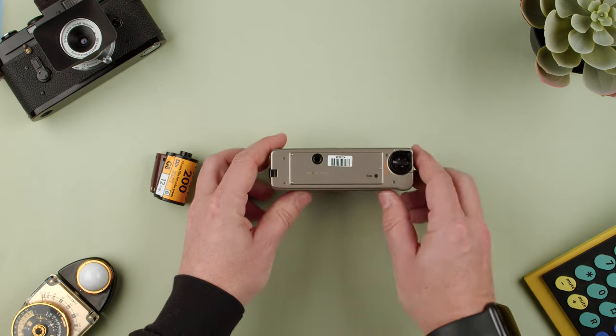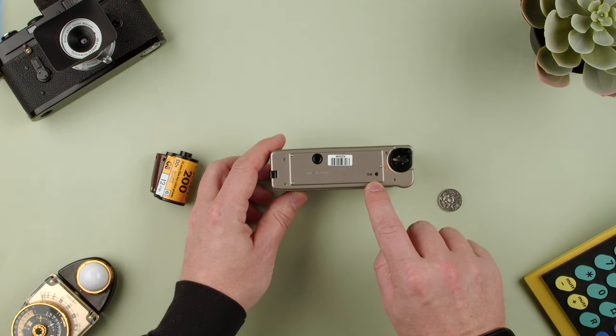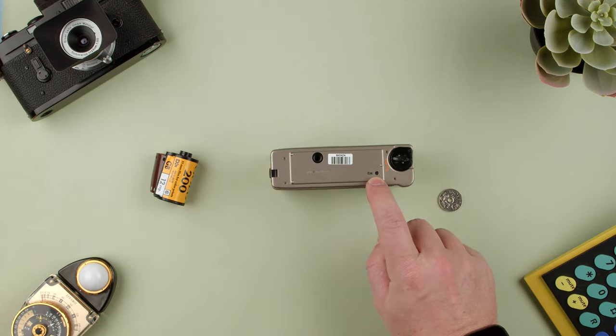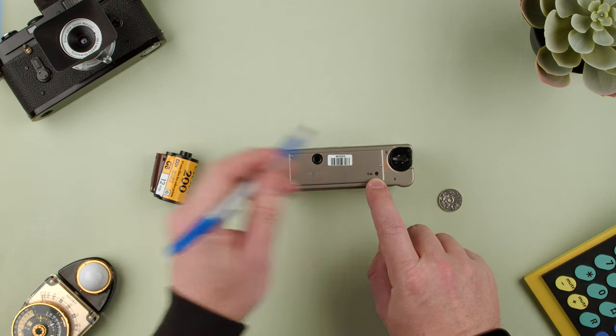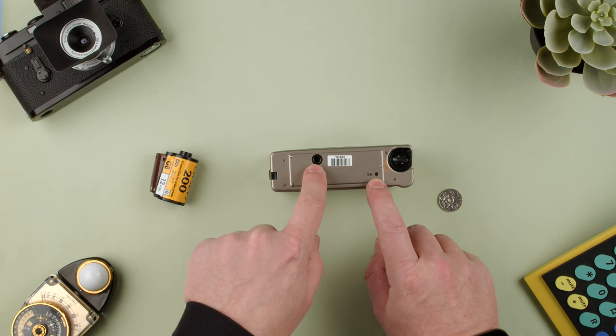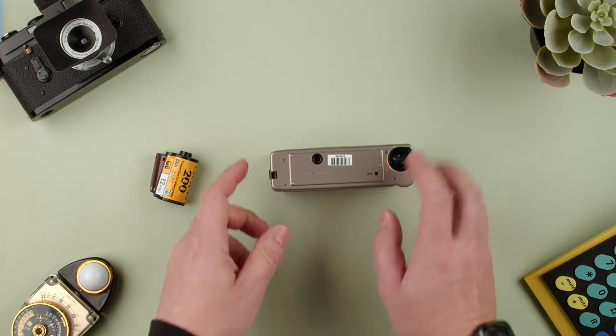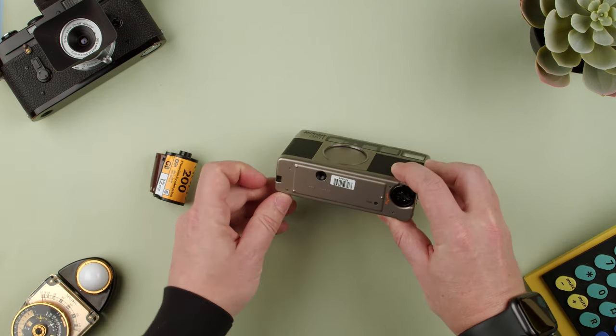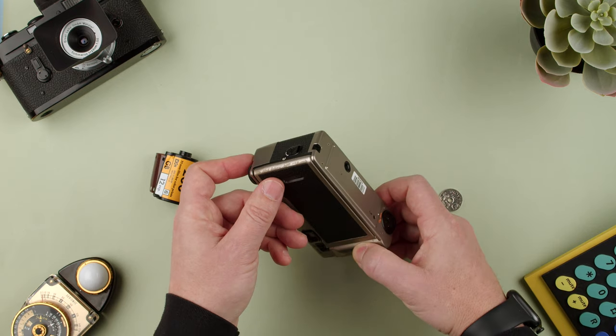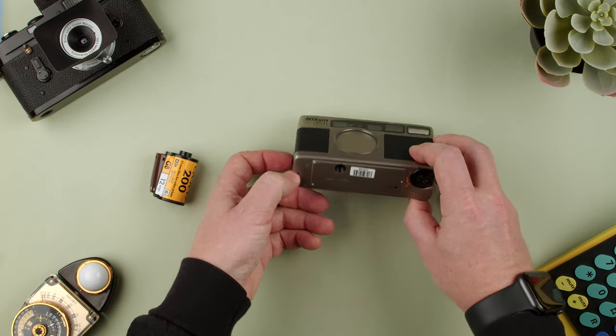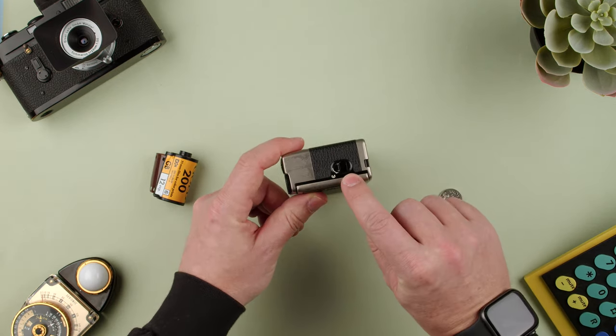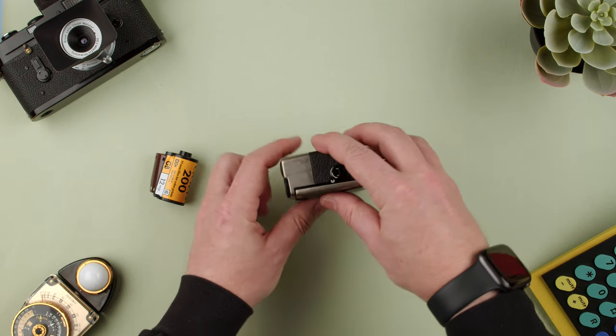This is the lens cover. On the bottom, we have the battery cover, the rewind button. If you want to rewind mid-roll, you press the button and it winds. There's a tripod socket and your strap lugs to carry. This one has a broken strap lug, so there's no way to put a strap on this camera.